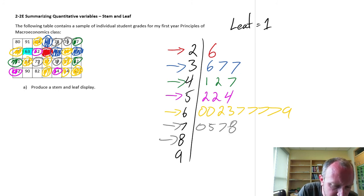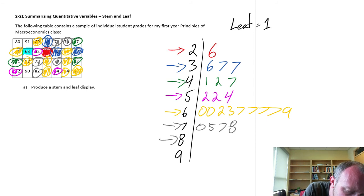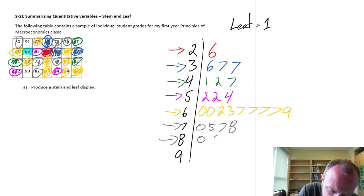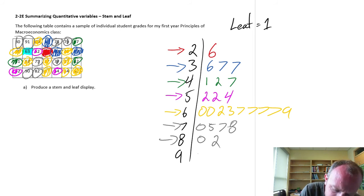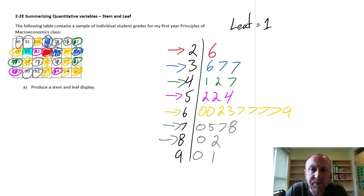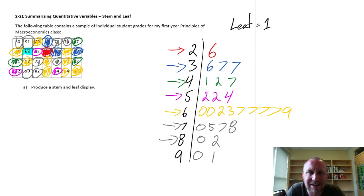Finally, for stem 8 I have 82 and 80, giving leaves 0 and 2. For stem 9, I have 90 and 91, giving leaves 0 and 1. And there's what our stem and leaf display looks like.